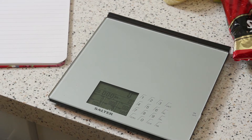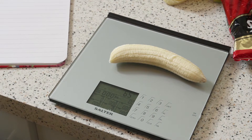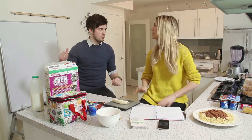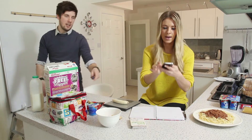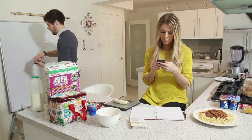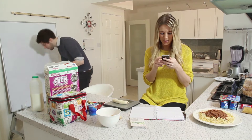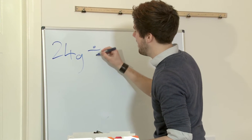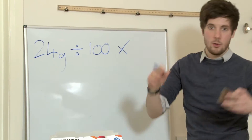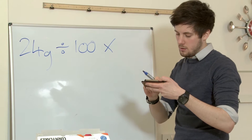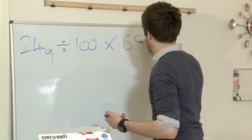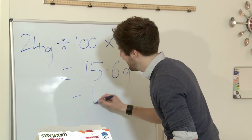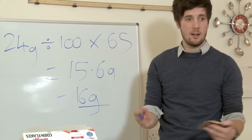Placing the banana on the scales, zeroed first - the banana is 65 grams. Using the app, we find there are 24 grams of carbs per 100 grams of banana. The calculation is: divide 24 by 100, then multiply by the weight of the food, which is 65 grams. That gives us 15.6 grams, which you round up to 16 grams of carbohydrate in that banana.